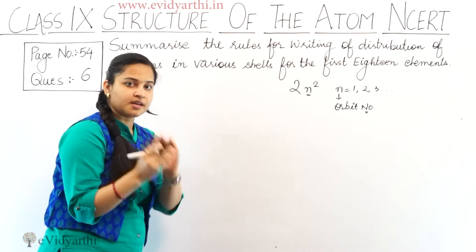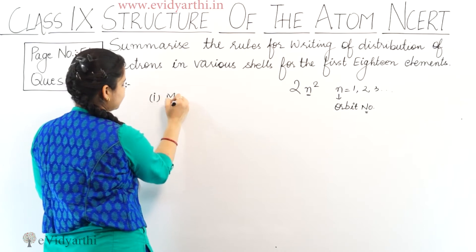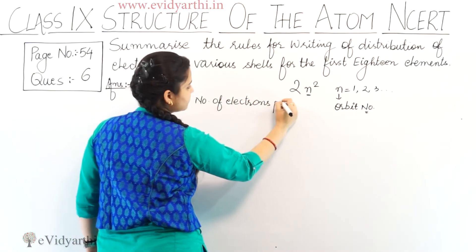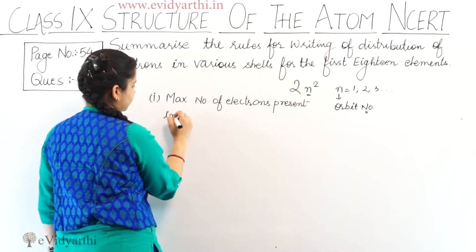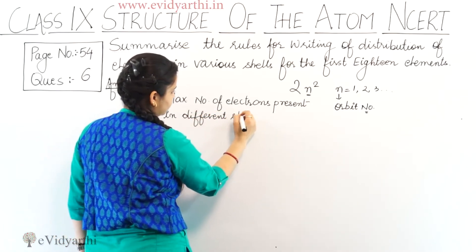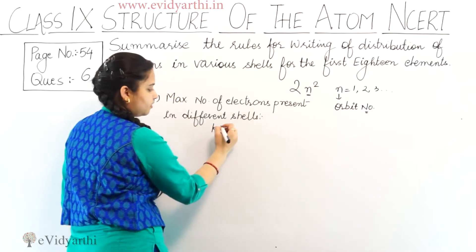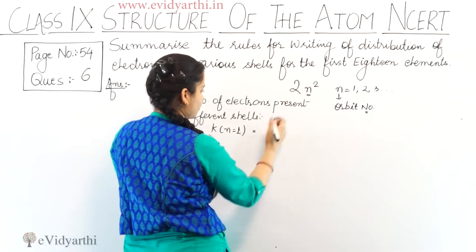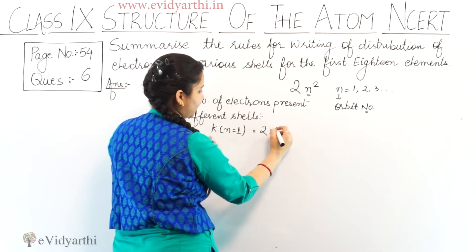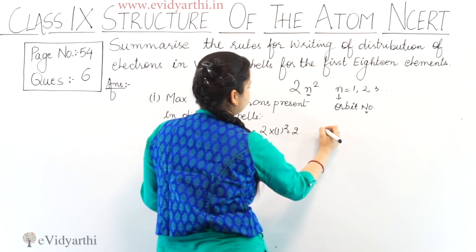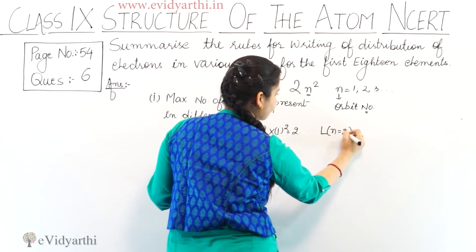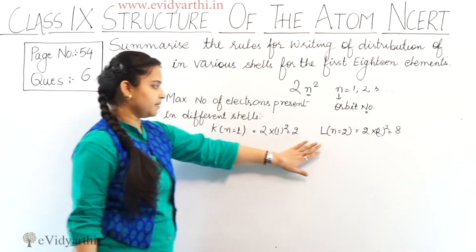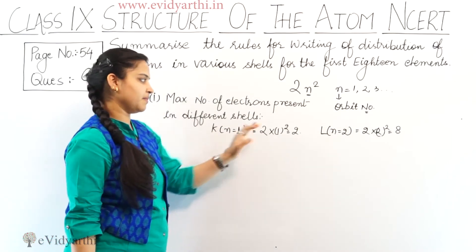Maximum number of electrons present in different shells. For the K shell, n is equal to 1. So the maximum number of electrons in the K shell, given by the formula 2n², is 2 × 1² = 2. Coming to the L shell, the value of n is 2. So 2 × 2² = 8. The L shell can have a maximum of 8 electrons and the K shell a maximum of 2.